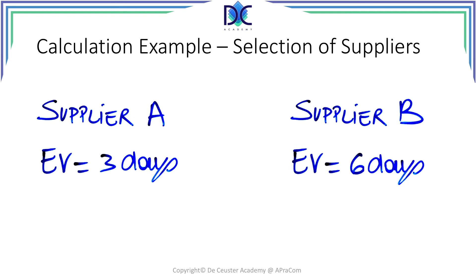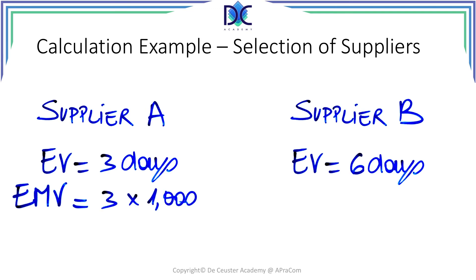The next element is to calculate the expected monetary value. We multiply the expected value by the cost of one day — let's say it's again one thousand euro. The expected monetary value for supplier A is equal to the expected value of three days multiplied by one thousand euro per day, giving three thousand euro in total. The same for supplier B: six days times one thousand is six thousand euro.